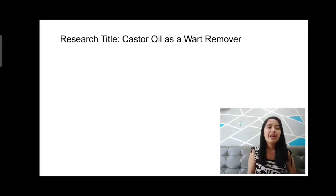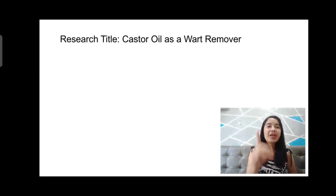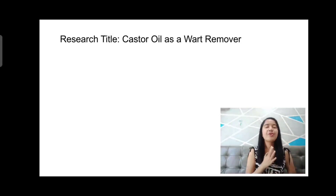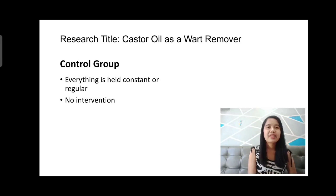Let's look at the true experimental process using this example title: 'Castor Oil as a Wart Remover.' The problem is the wart, and the intervention is castor oil. We randomly select participants and divide them into two categories: the control group and the experimental group. With the control group, everything is held constant — we are not applying any castor oil to the affected part; they simply use the same regular soap they use every day.